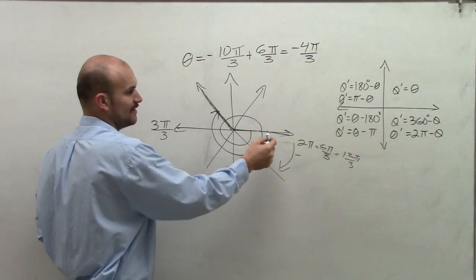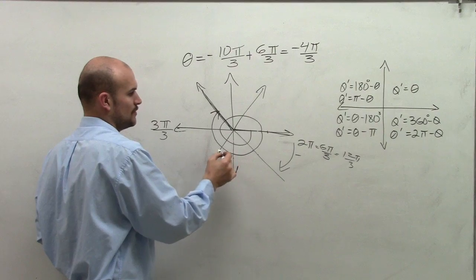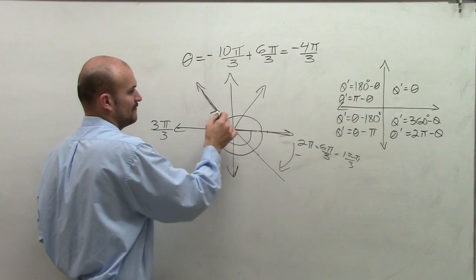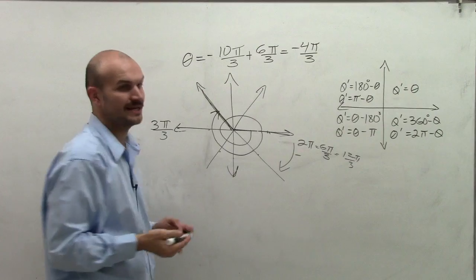And if you notice, negative 4 pi over 3 is 1, 2, 3, 4. That is the same angle, but again, it's still negative.